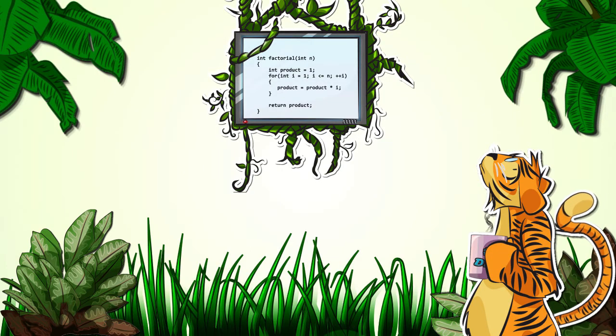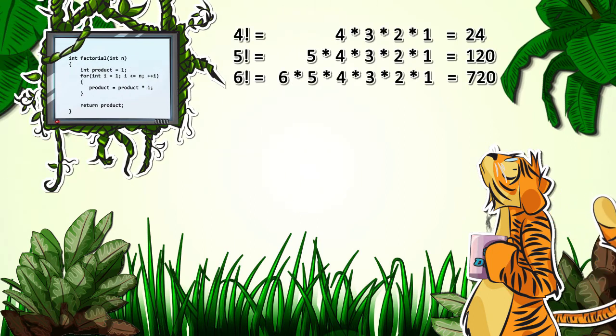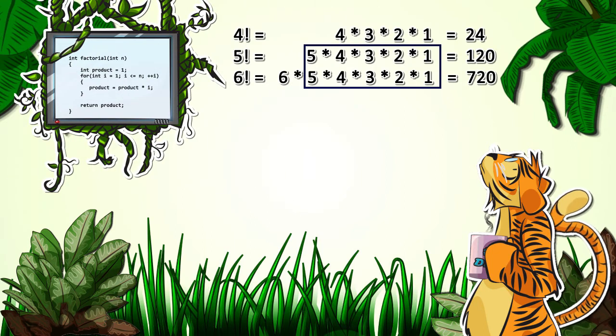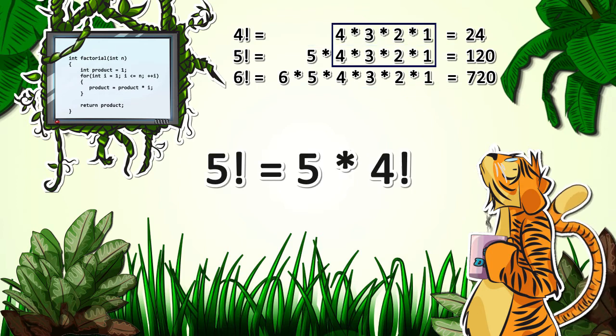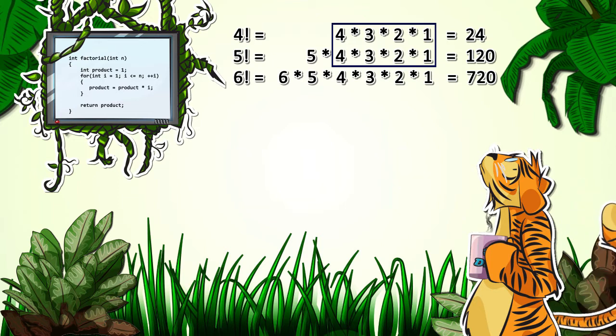If you notice from our previous example, 5 factorial and 6 factorial are similar. 6 factorial can be redefined as 6 factorial equals 5 factorial times 6. And by the same logic, 5 factorial can also be redefined as 5 factorial equals 4 factorial times 5, and so on.